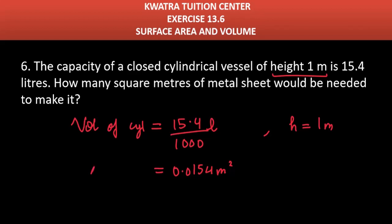Now, volume of cylinder is what we have. Basically, it is equal to π r² h. You have h value. π will be 22 by 7. r² into h. H is what we have, 0.0154.